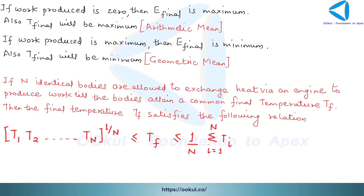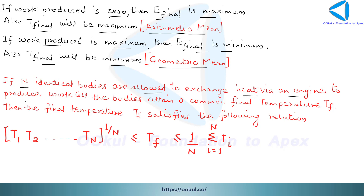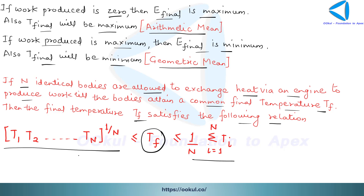If work produced is zero, the final energy and final temperature are maximum, equal to the arithmetic mean. If work produced is maximum, the final temperature is minimum, equal to the geometric mean. Generalizing, if n identical bodies exchange heat via an engine to produce work until reaching a common final temperature Tf, then Tf lies between the geometric mean and the arithmetic mean of the n temperatures.